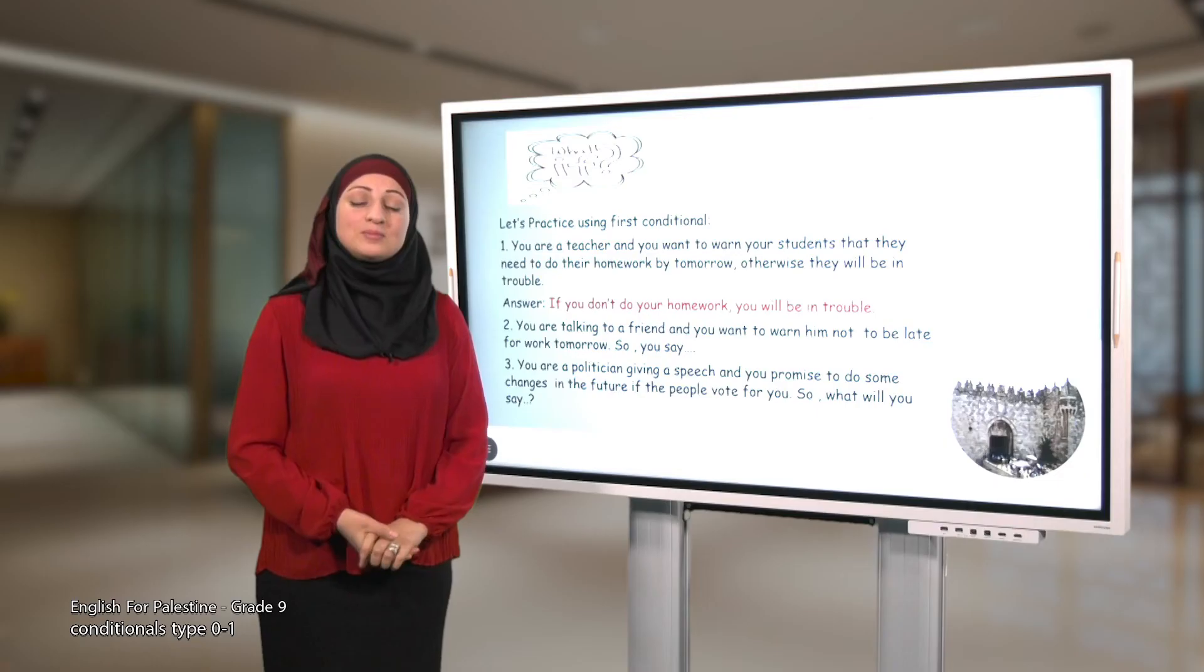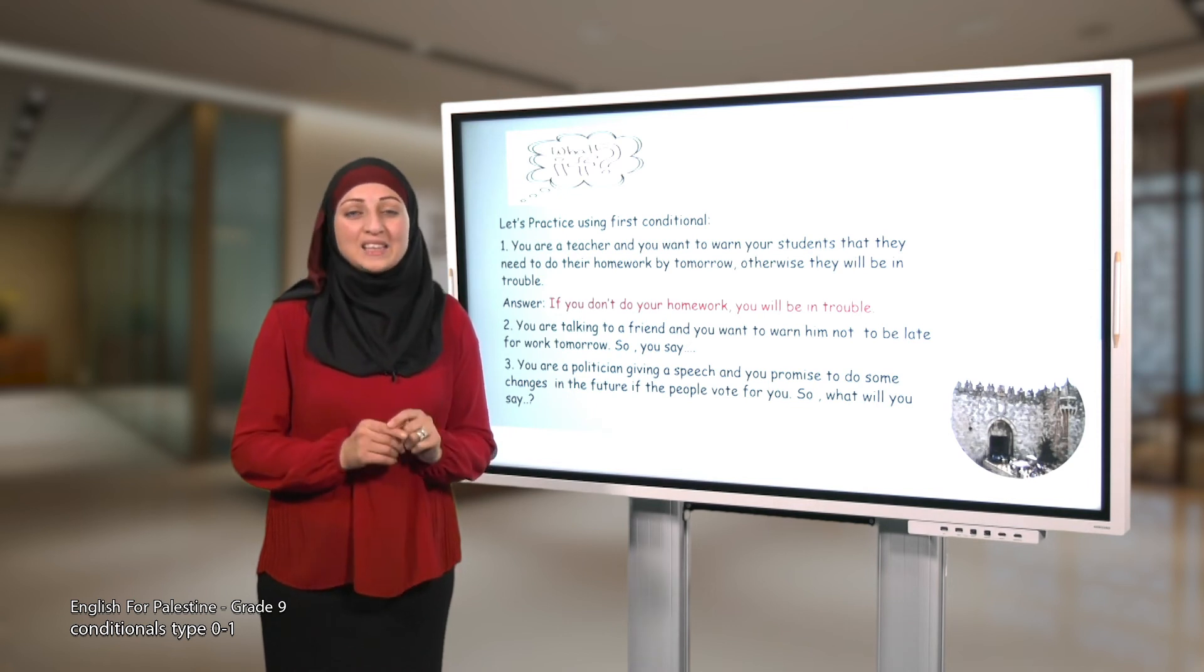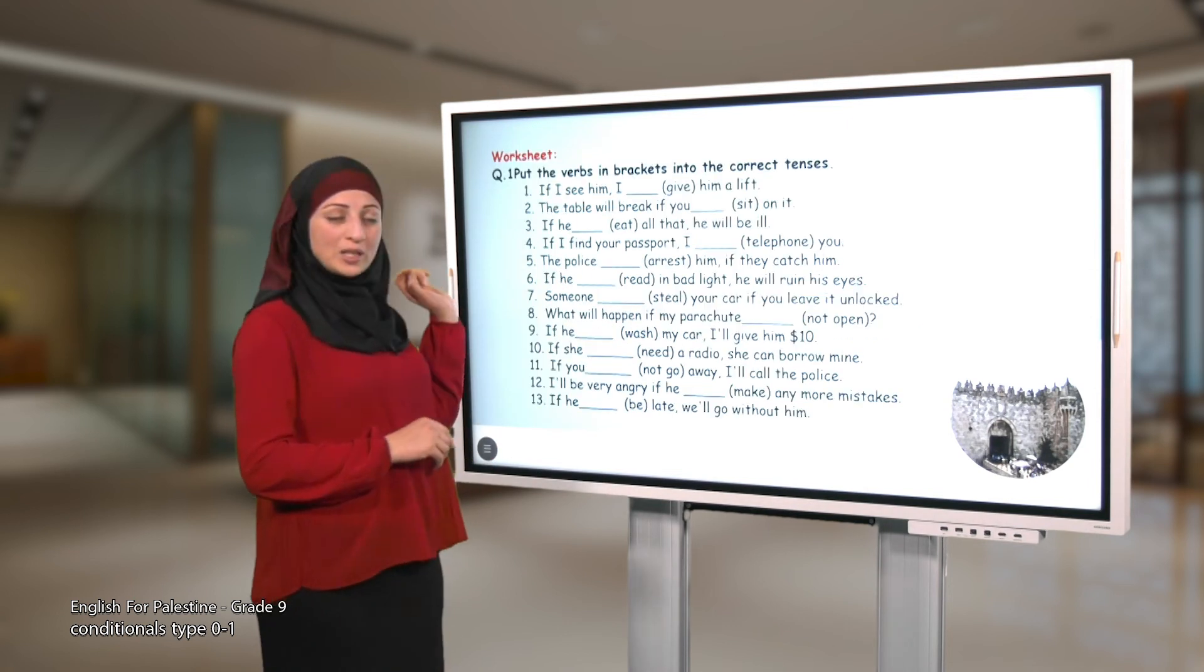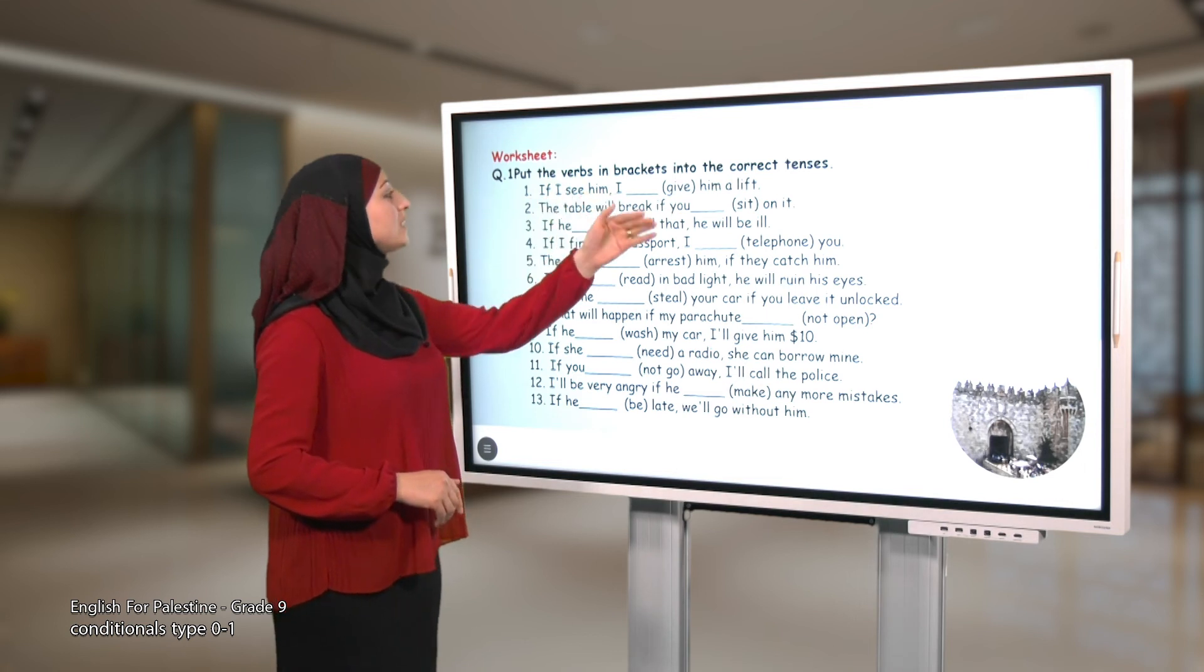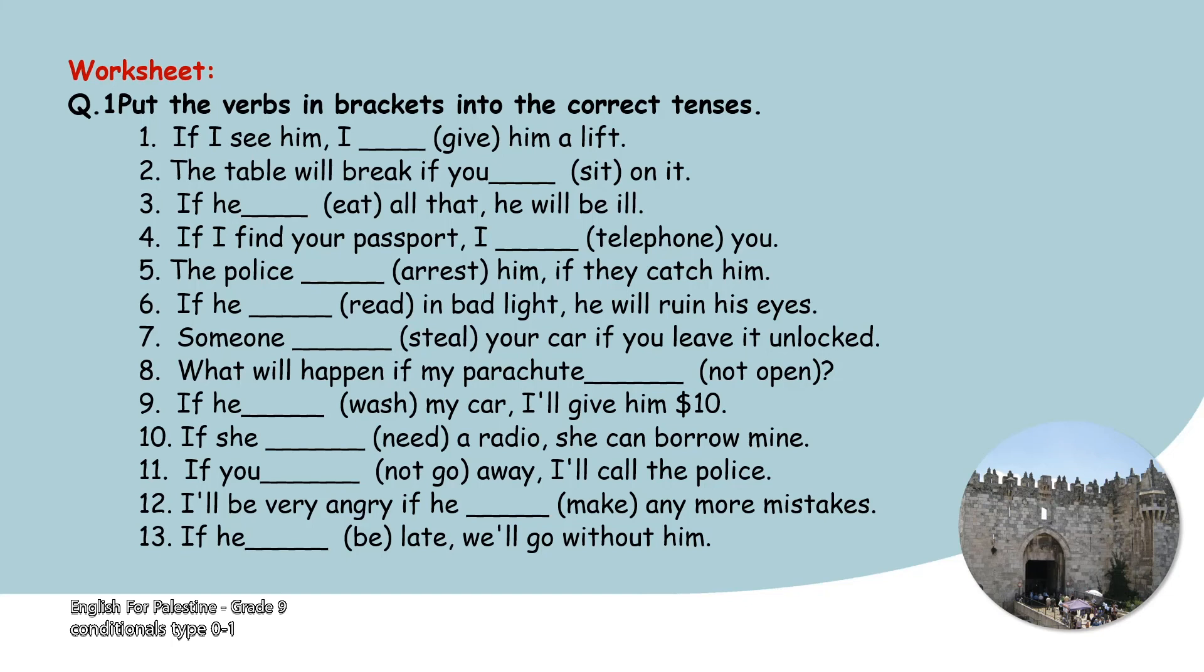This is all about conditionals type zero and one. Now you have a task to do. Question number one: Put the verbs in brackets into the correct tenses. Sentence number one: If I see him, I give him a lift. Number two: The table will break if you sit on it. Number three: If he eat all that, he will be ill. Number four: If I find your passport, I telephone you. Number five: The police arrest him if they catch him.